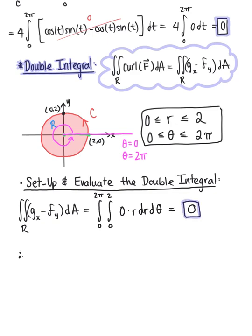We have confirmed consistency between both forms of Green's theorem: the line integral over curve C of F · dr equals the double integral over region R of the curl of the vector field dA. Both are equal to 0.